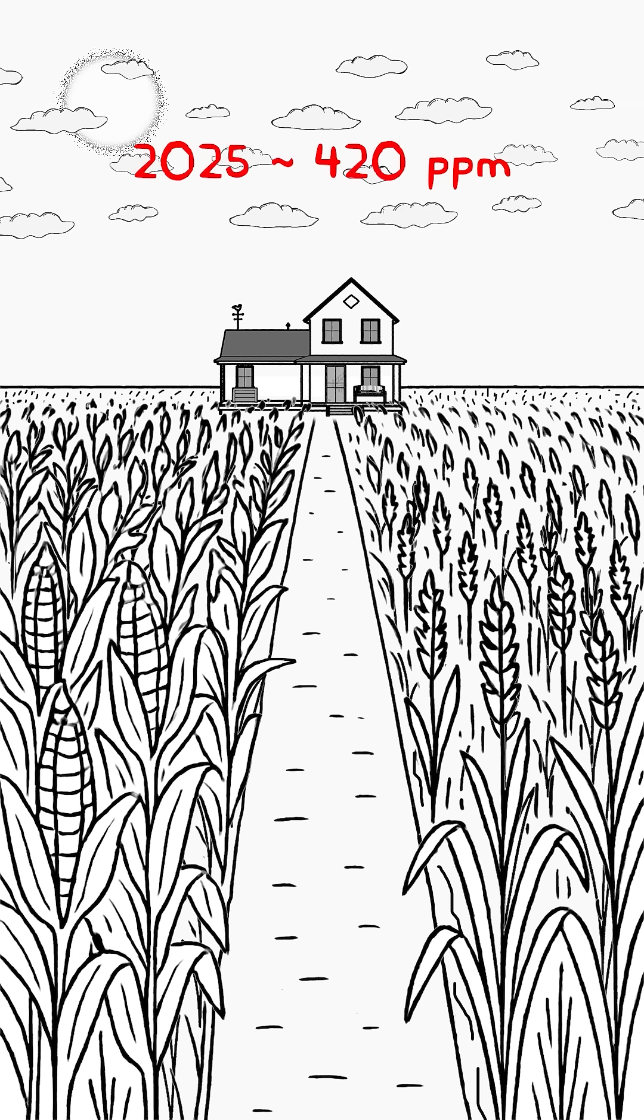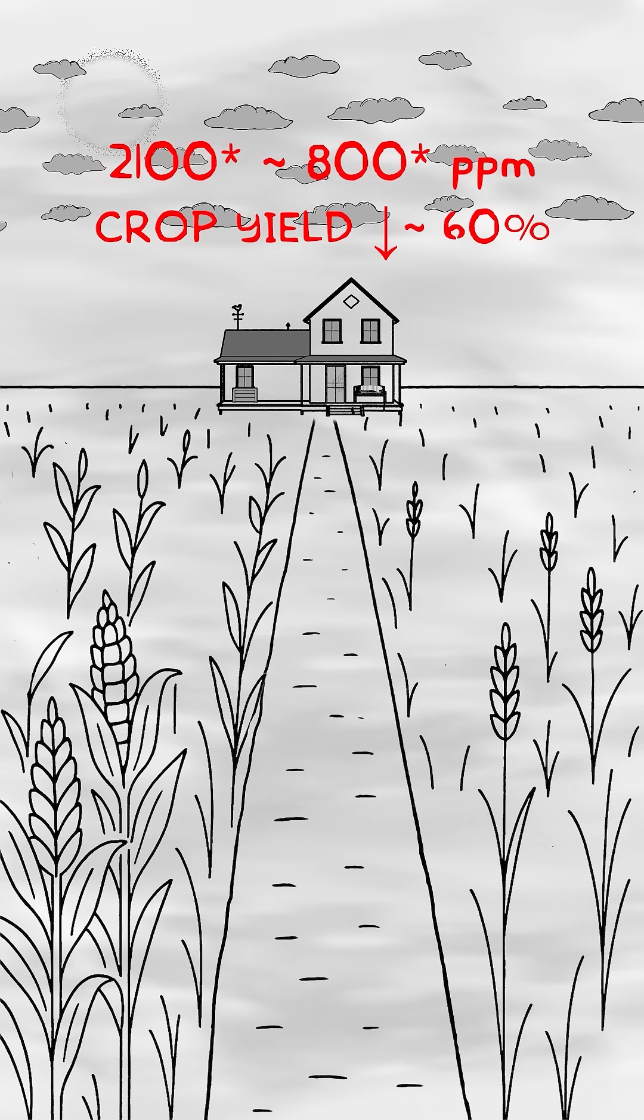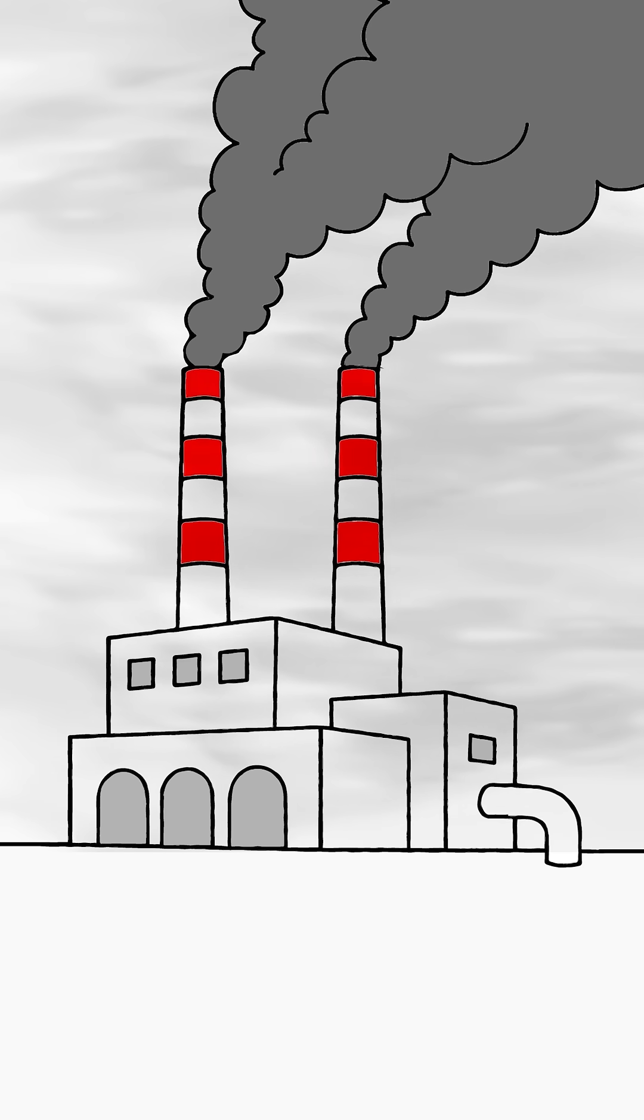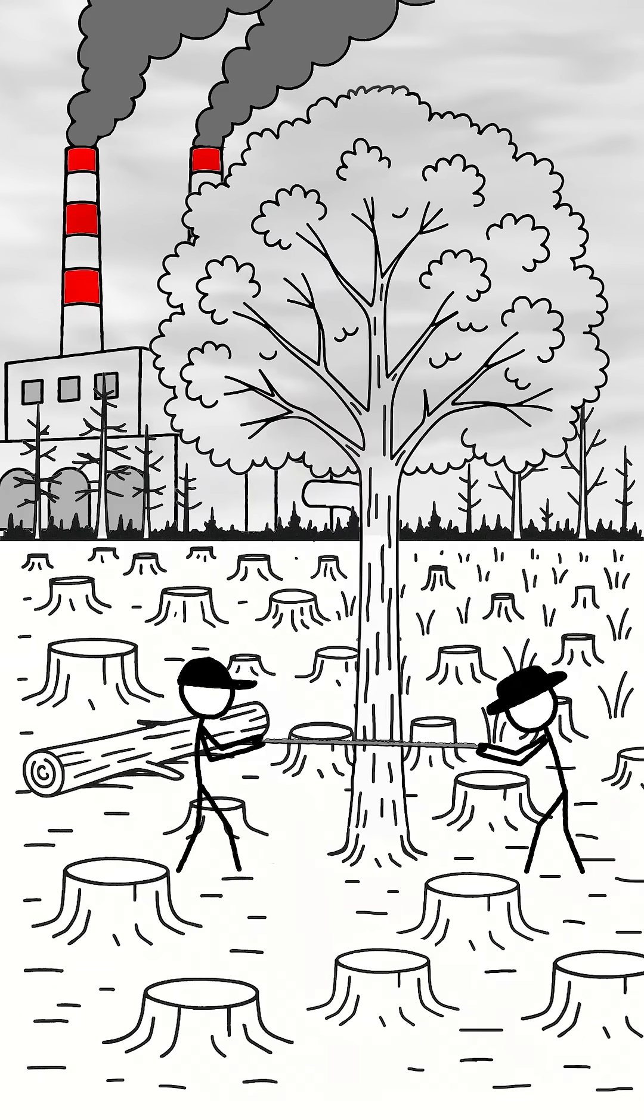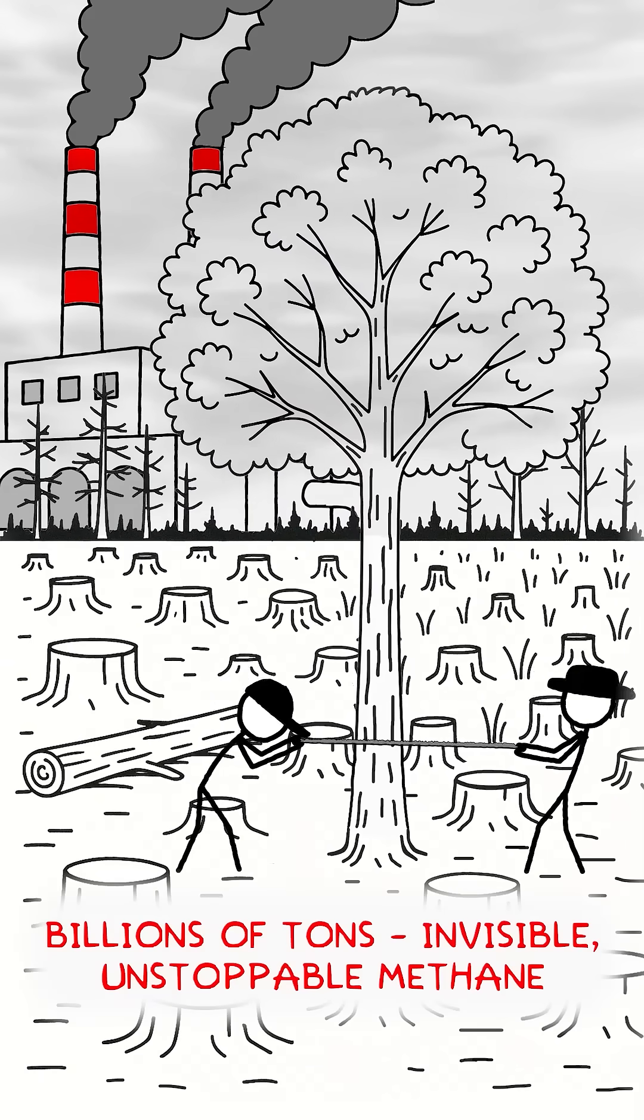Photosynthesis will falter, and wheat and corn yields will fall by 60%. The cause: burning coal and oil, deforestation, and agriculture releasing billions of tons of methane.